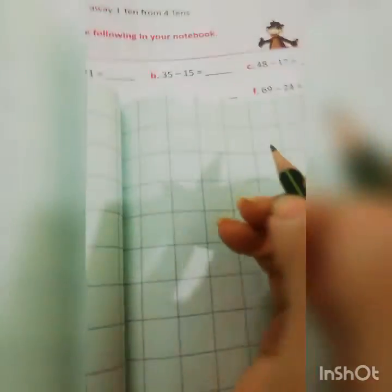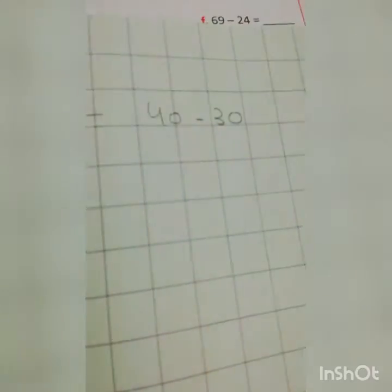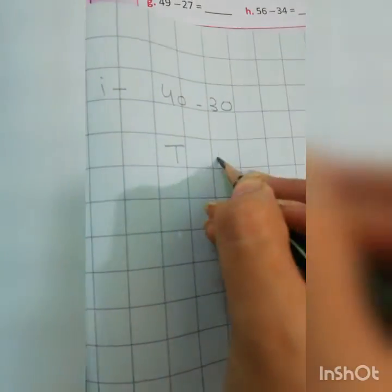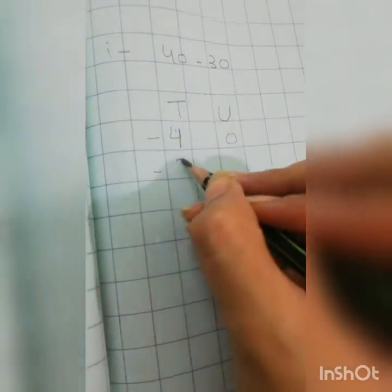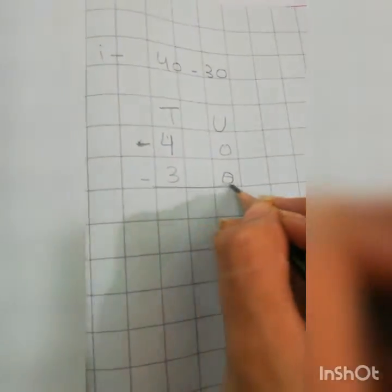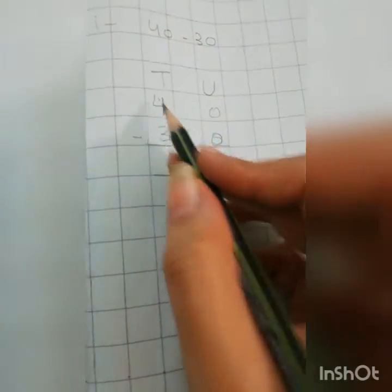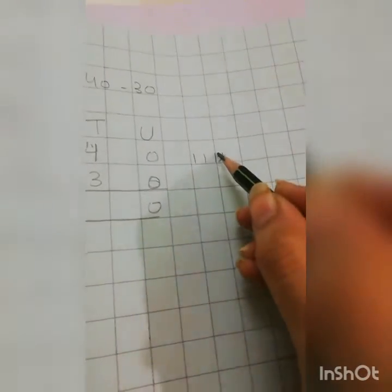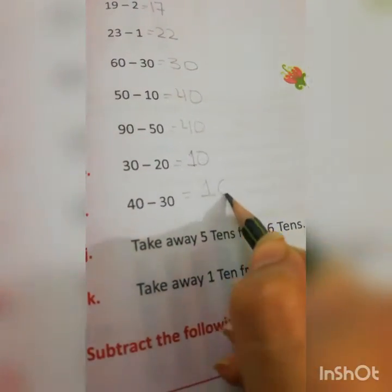Now come to the next sum, that is I: 40 minus 30. Again 10s and units: 40 minus 30. First we will see the units — there are no units, 0 minus 0 is 0. Then 4 minus 3: draw 4 lines, take away 3, remaining is 1. So the answer will be 10.